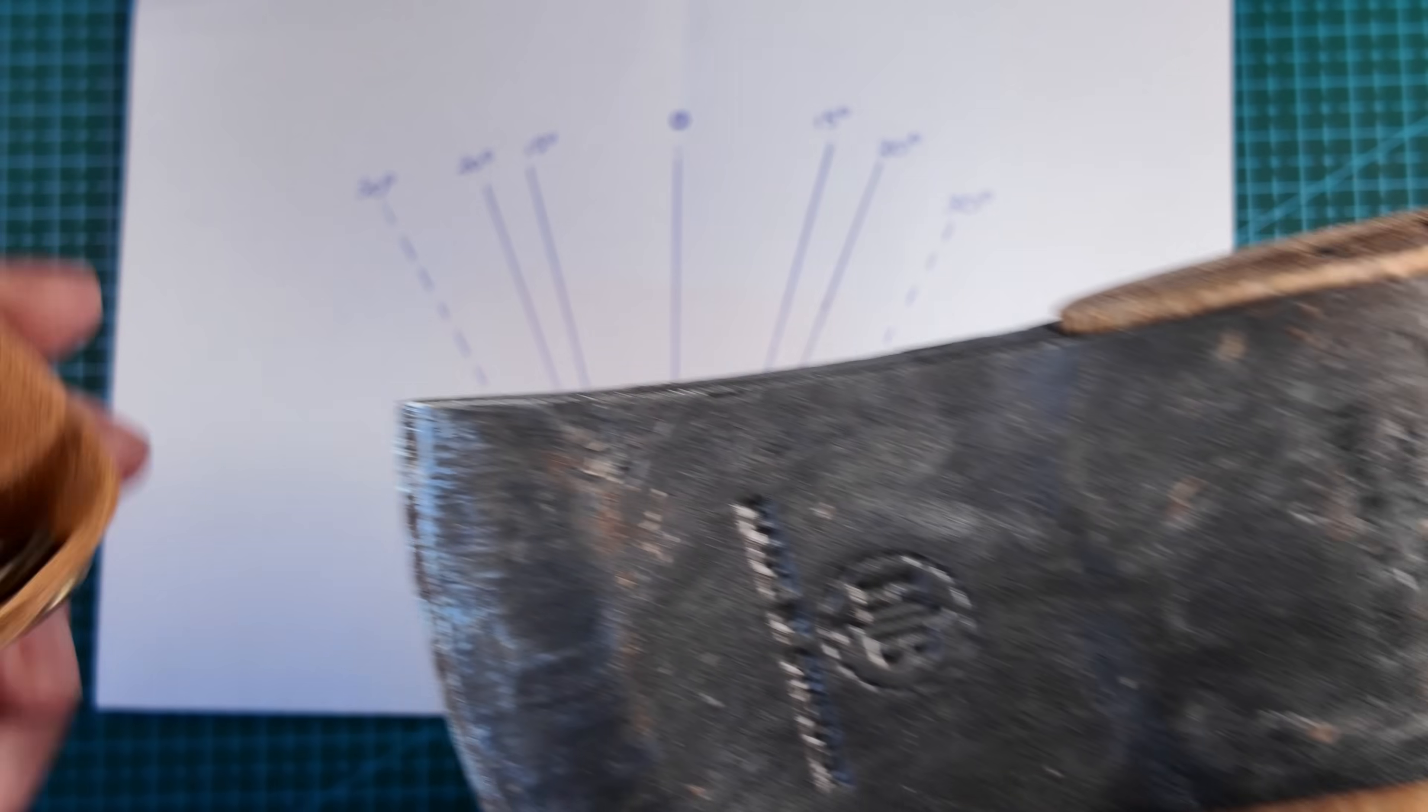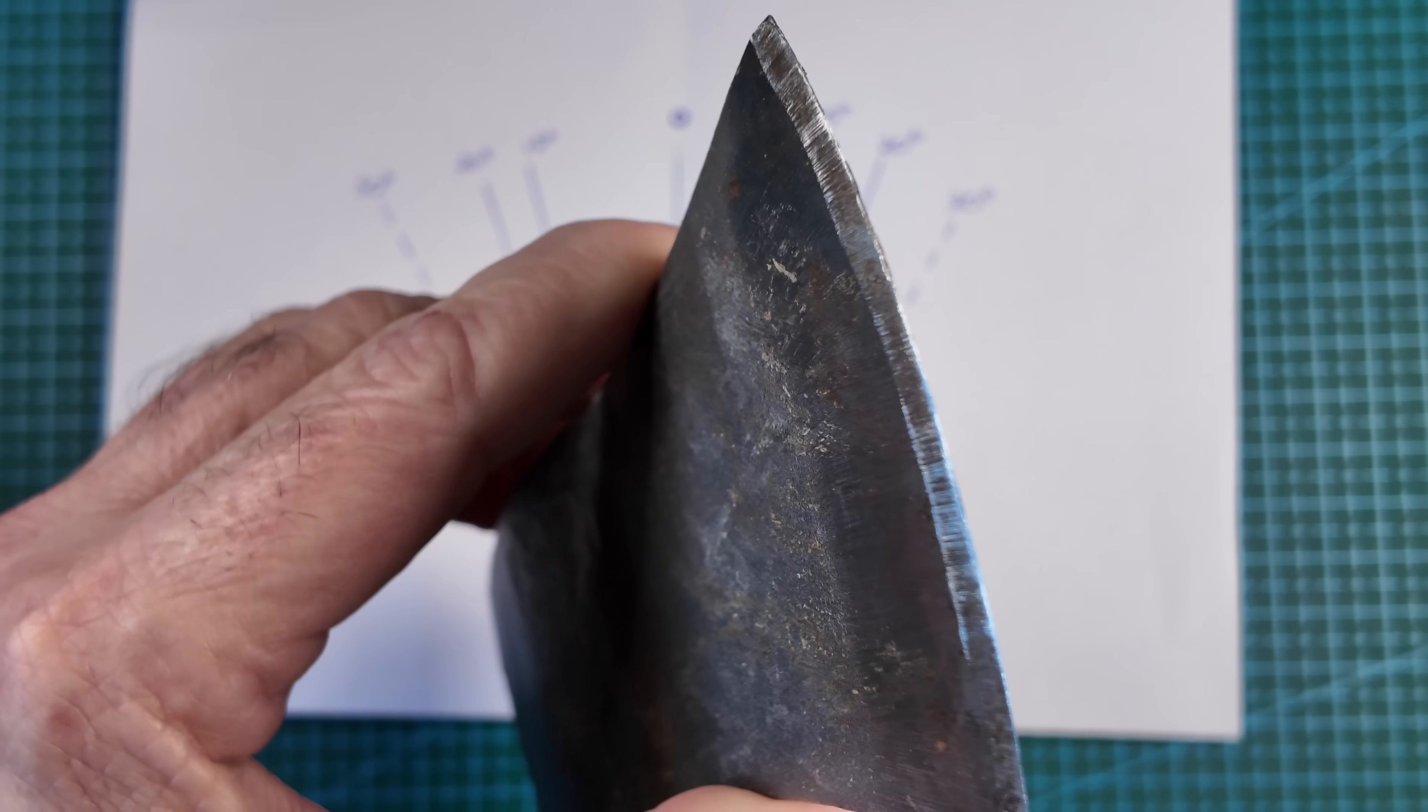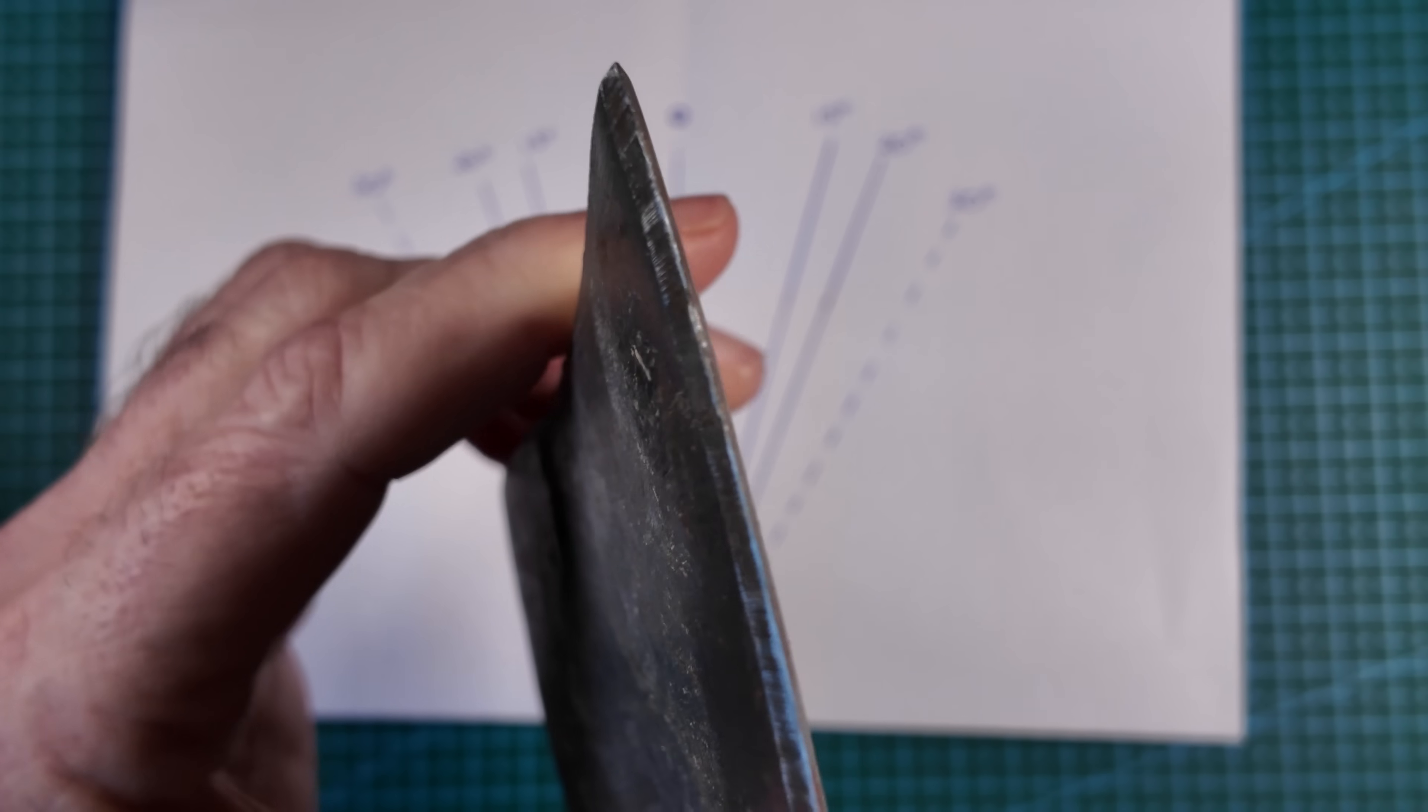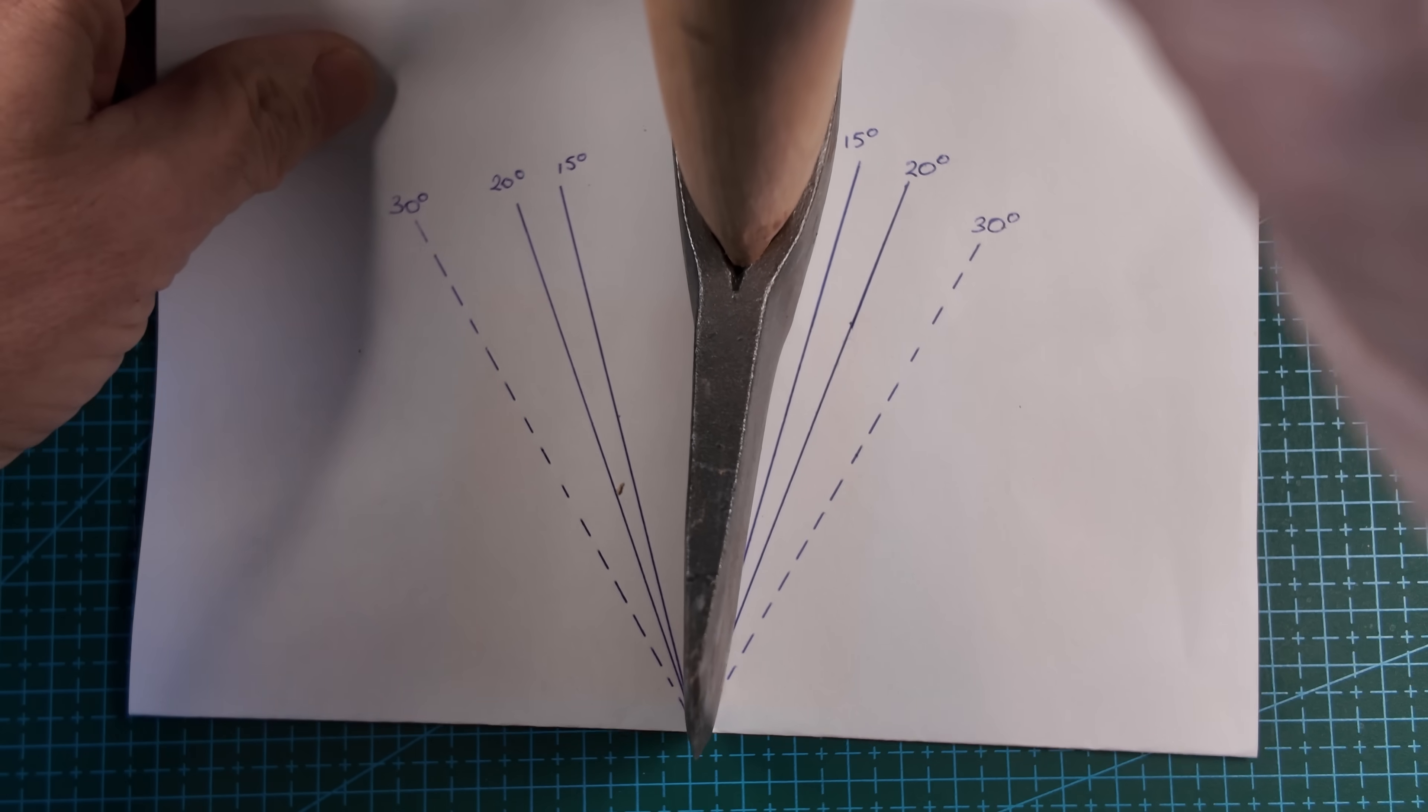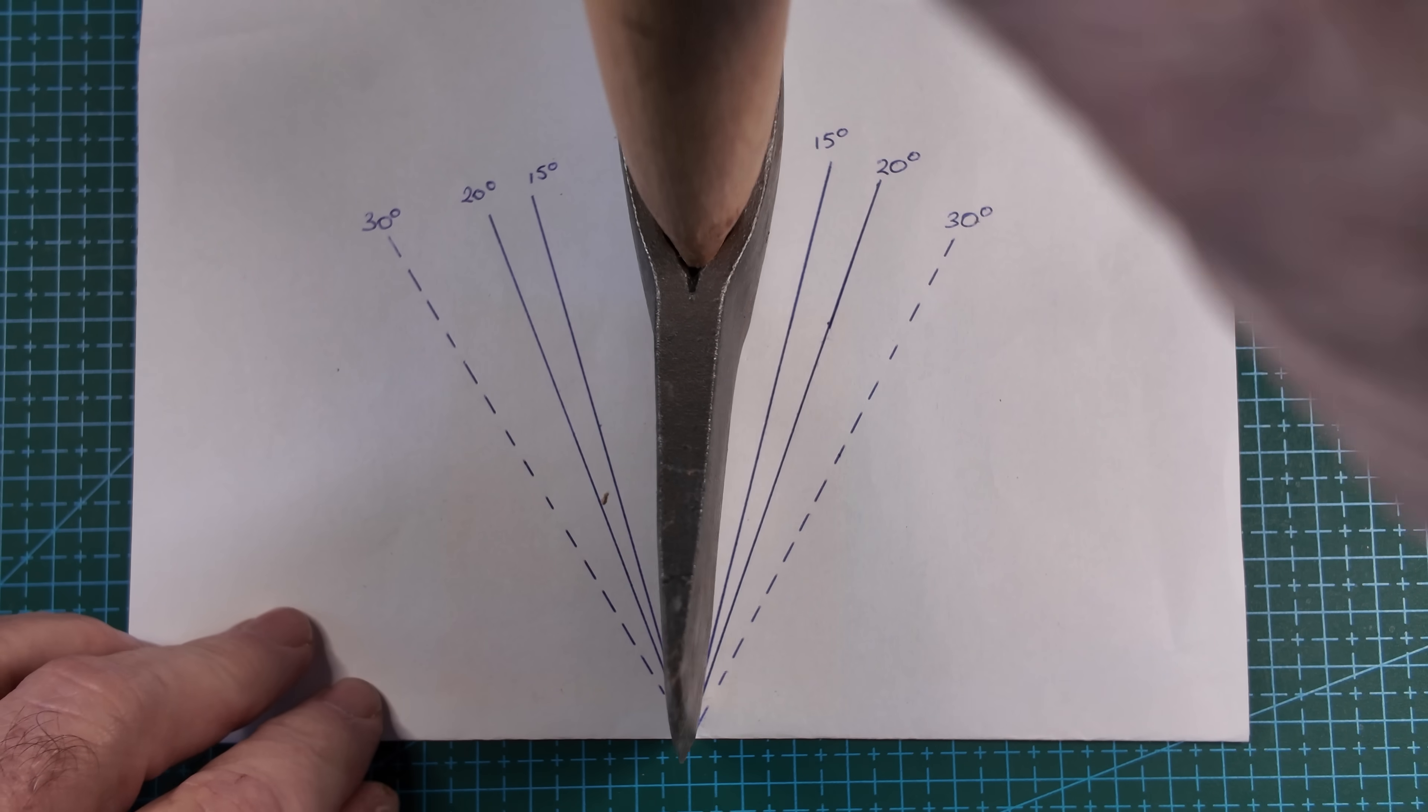So let's look at an axe. This is my Hultafors. You can see the edge here is quite different. It's thicker and it's a much less acute angle. The angle here is probably 25 to 30 degrees each side. If we were to blow that up and look at that there, it's probably somewhere between the 20 and the 30 degrees. Hopefully you can see that.